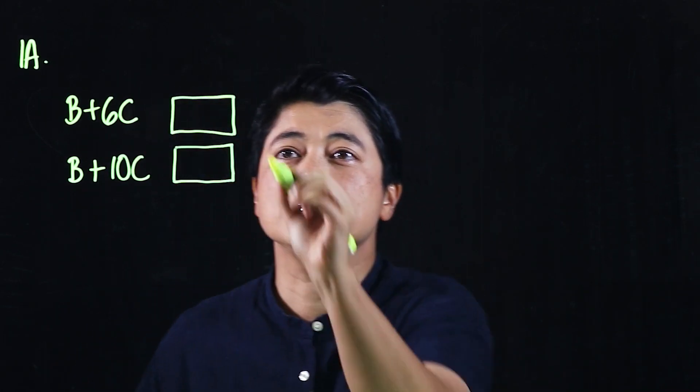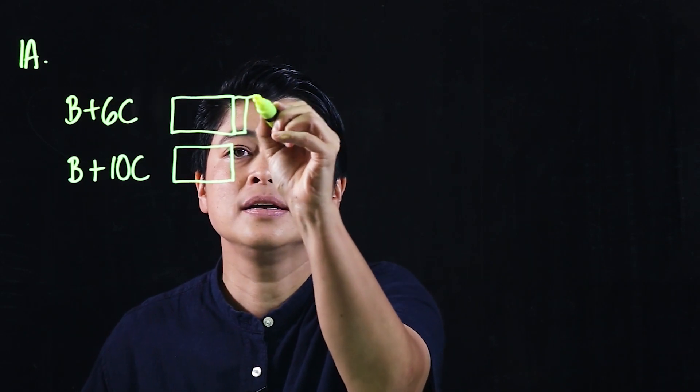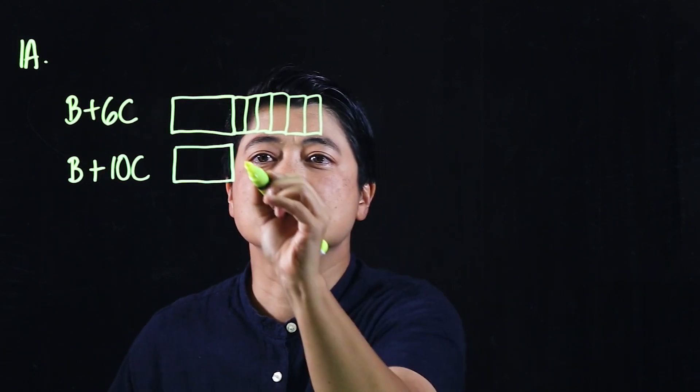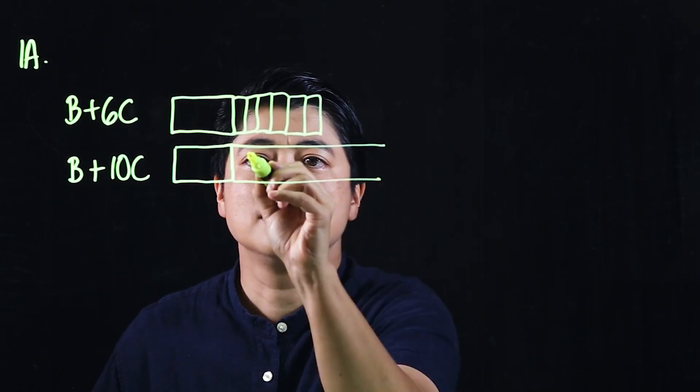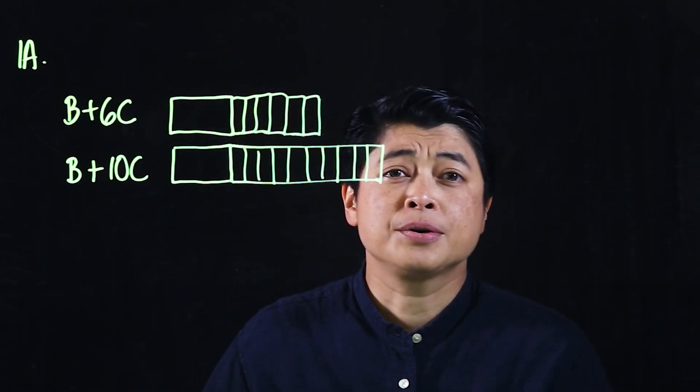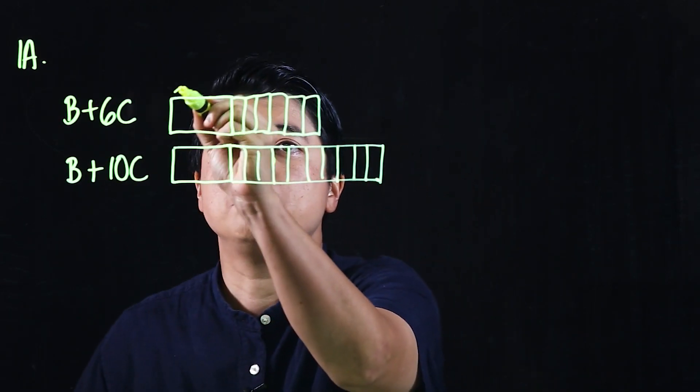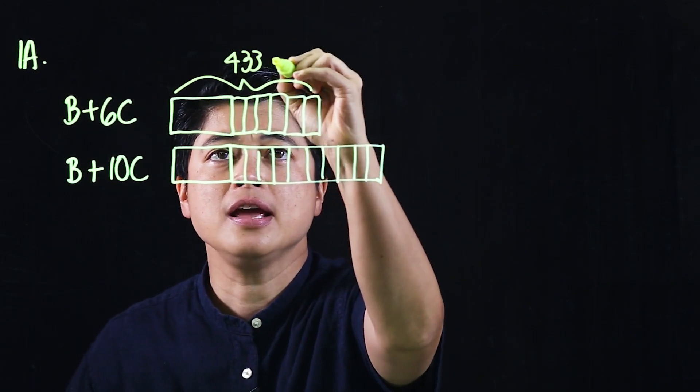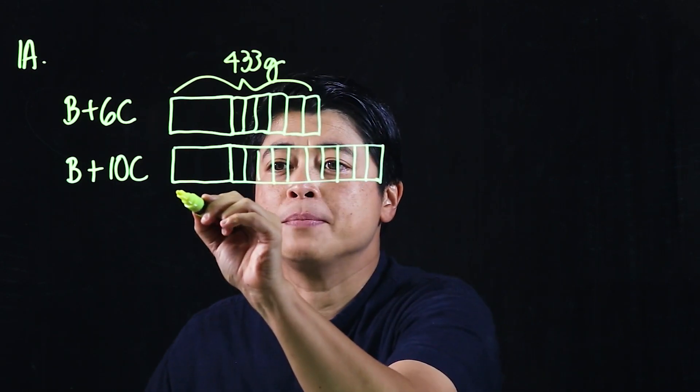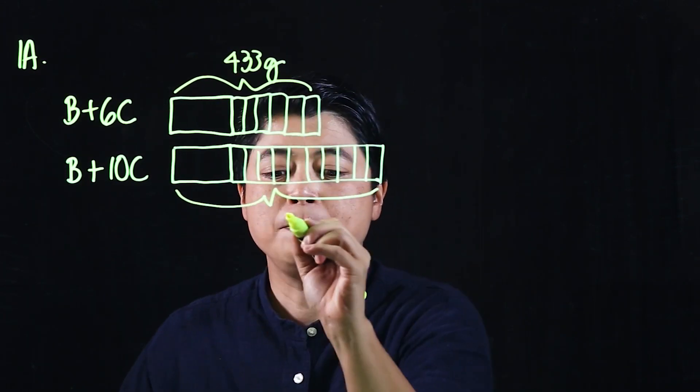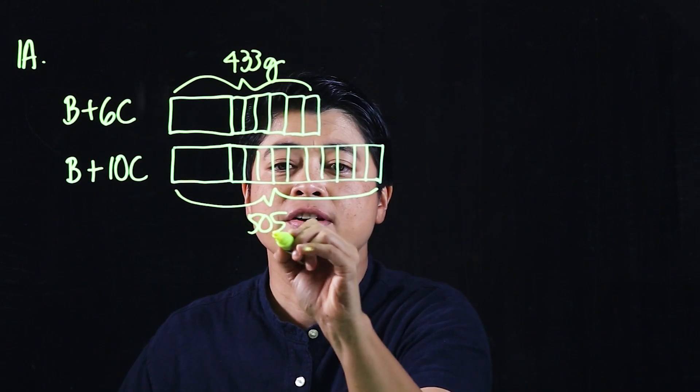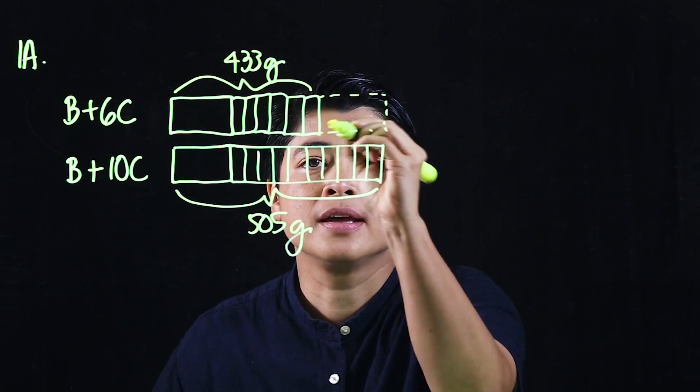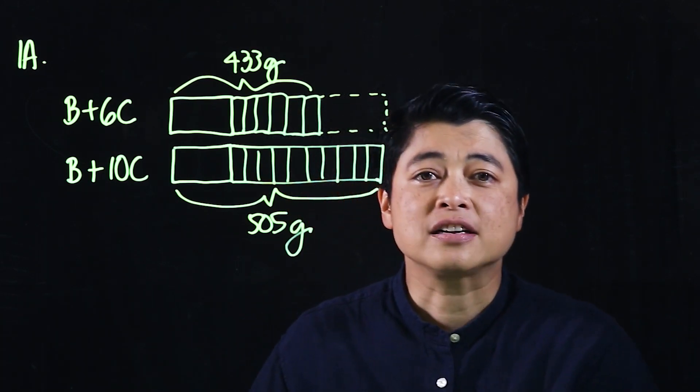The box is the same box, however the top has six cookies. So let's just say one, two, three, four, five, six. Those are the six, and these are now the 10. So the mass of the box with six cookies would be 433 grams, and the mass of the box with 10 cookies will be 505 grams.